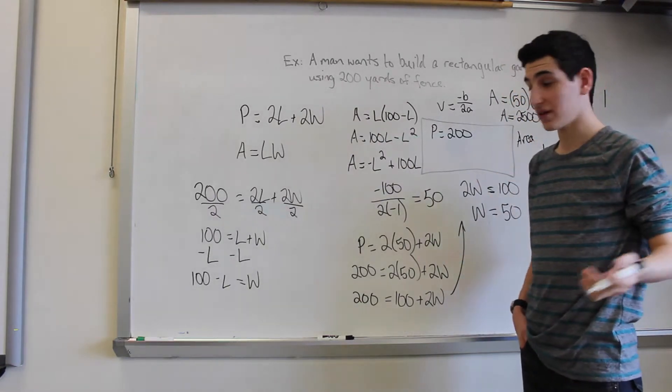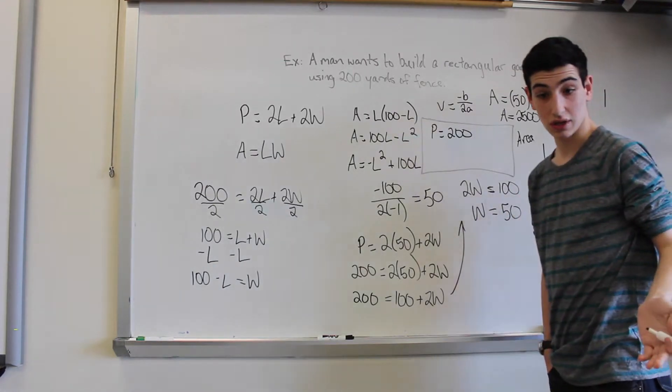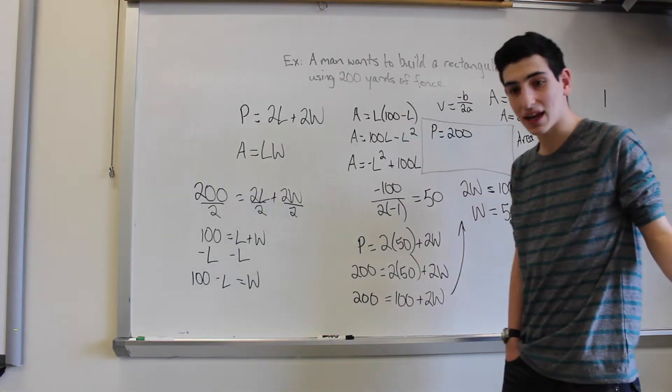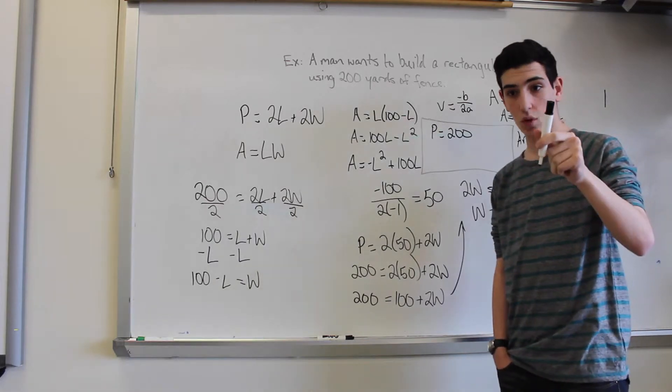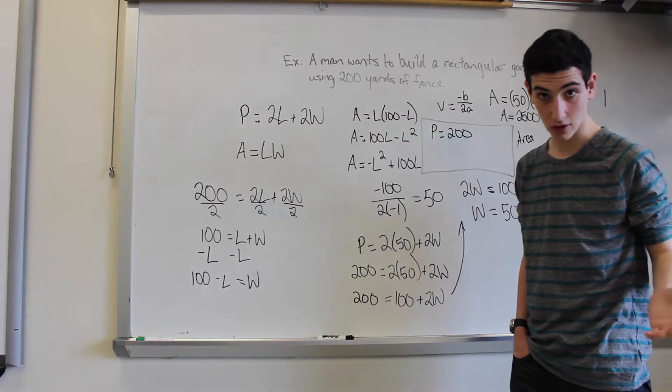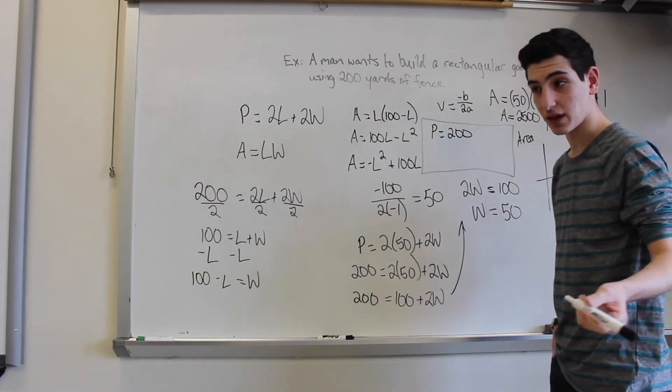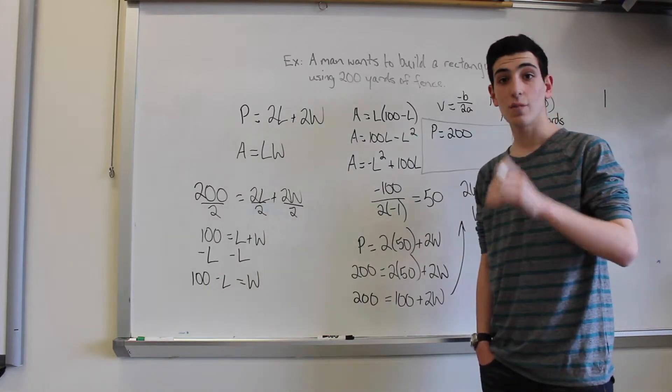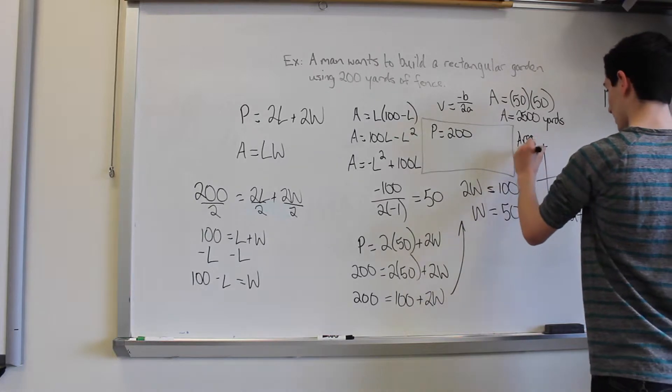And since we know that we have our vertex as 50, which can't be negative because you can't have negative area, we know that it's also a maximum point rather than a minimum point. And it also faces down, so that confirms our theory. And that that maximum is at 50. And when it's at 50, the maximum area is 2500. So we can already go ahead and draw that.